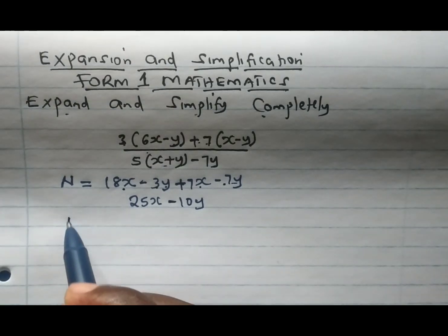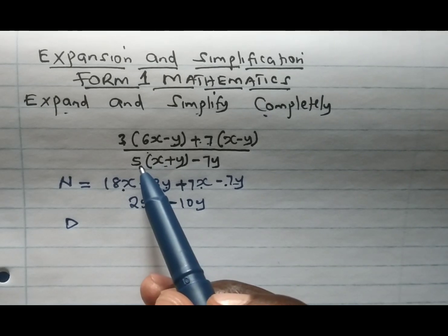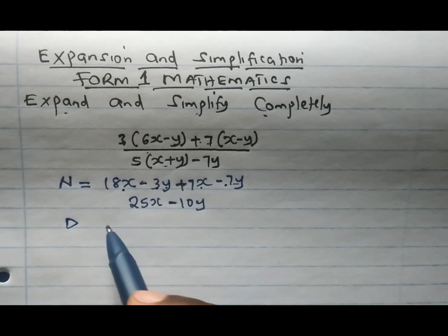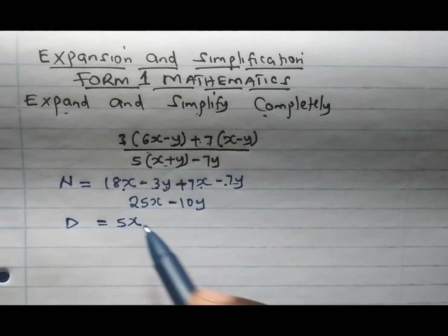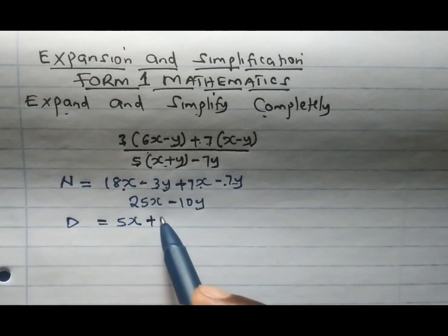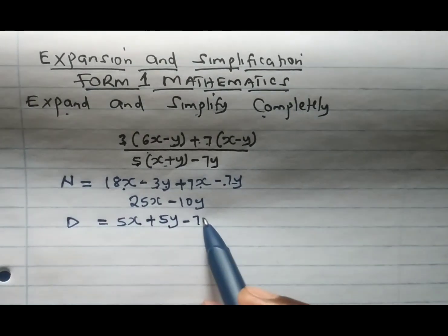Then we go to the denominator. We expand by removing the brackets. 5 times x gives 5x, 5 times y gives 5y, and lastly we minus 7y.